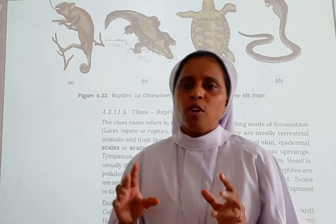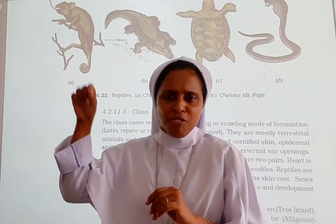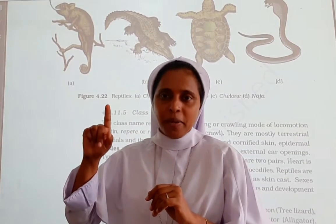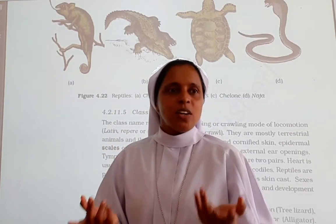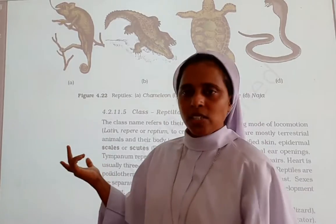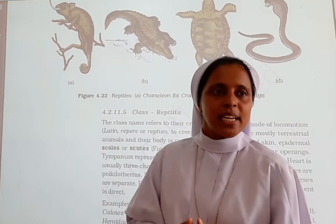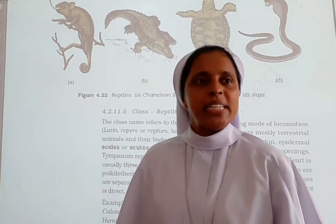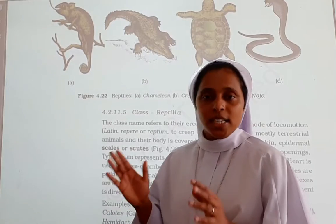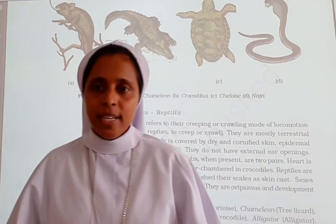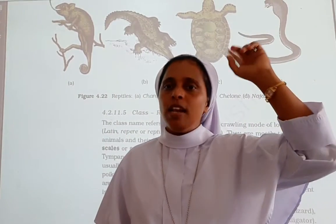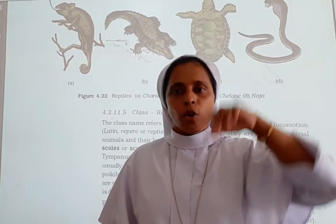To recall reptiles: they have dry scaly skin, creeping/crawling locomotion, tympanum instead of external ear, internal fertilization, are oviparous with direct development, and heart is three-chambered except in crocodiles (four-chambered). Examples to remember: snake, turtle, chameleon, and crocodile.